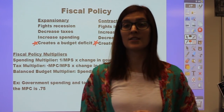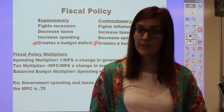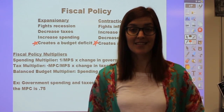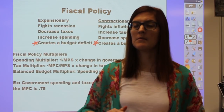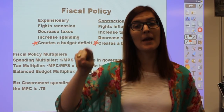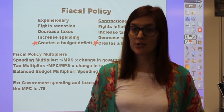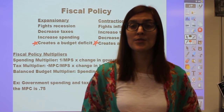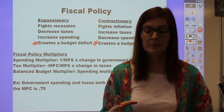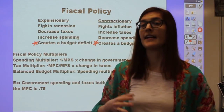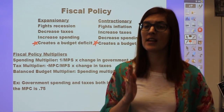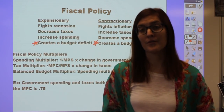An example of an automatic stabilizer for contractionary fiscal policy is our progressive tax system, where the more money you make, the higher percentage you pay in taxes. If there's inflation, we demand higher wages, and by demanding higher wages we automatically pay more in taxes—performing contractionary fiscal policy without a single new law. Most government entitlement programs and transfer payments are automatic stabilizers set up to naturally kick in during a recession or inflation.